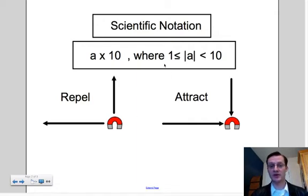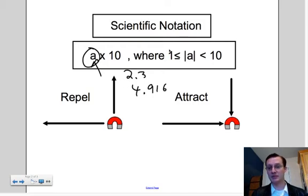So something you need to understand about scientific notation. You're going to have two numbers, and you'll have the multiplication symbol. The first term, or the first factor, is going to have to be a one-digit number. So you may have 2.3, you may have 4.916, but it has to be between 1 and 10. Absolute value has to be between 1 and 10.